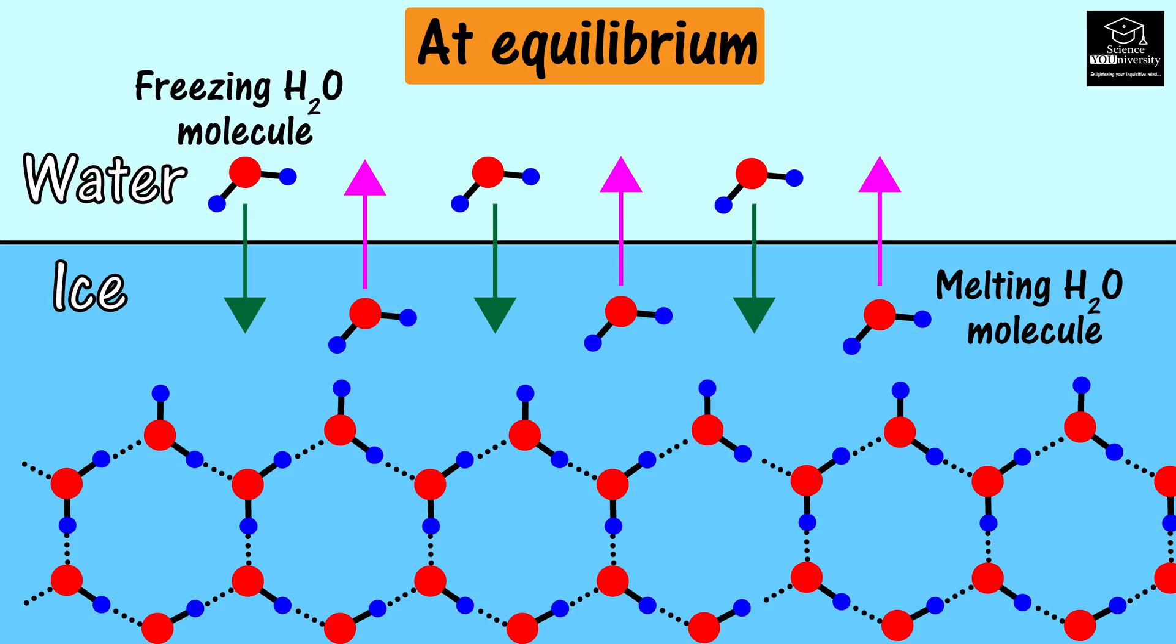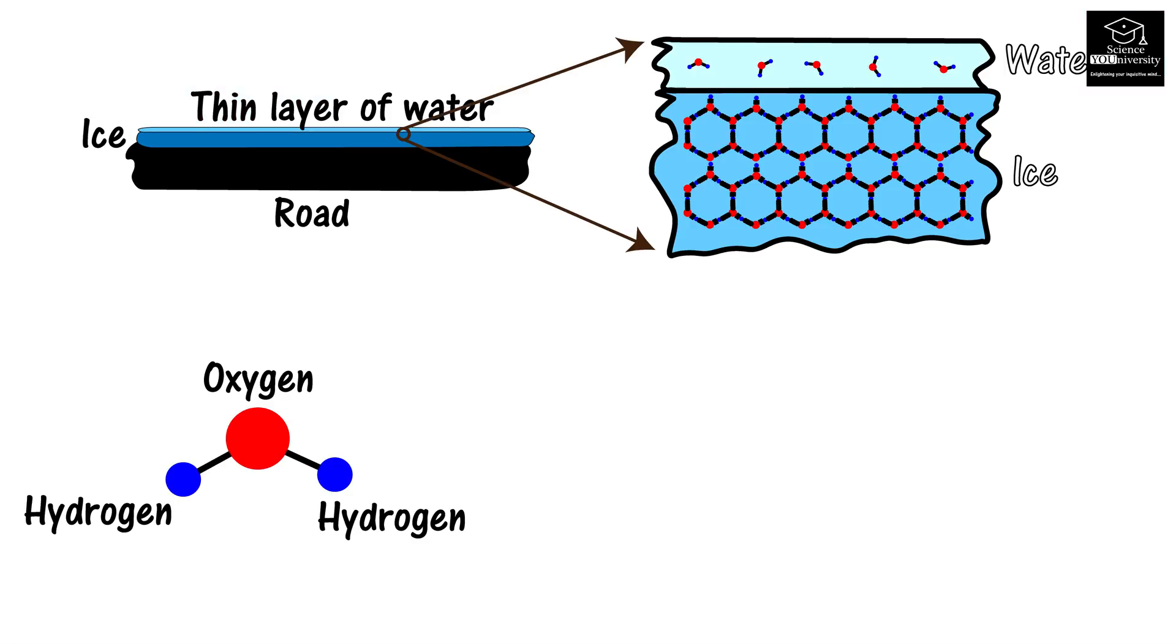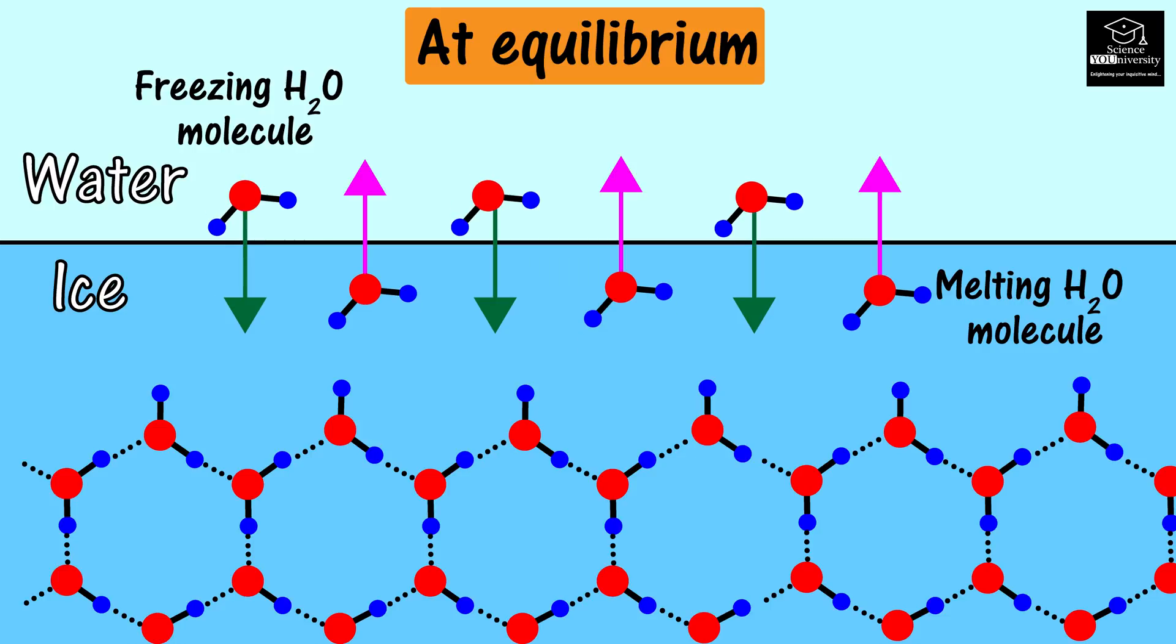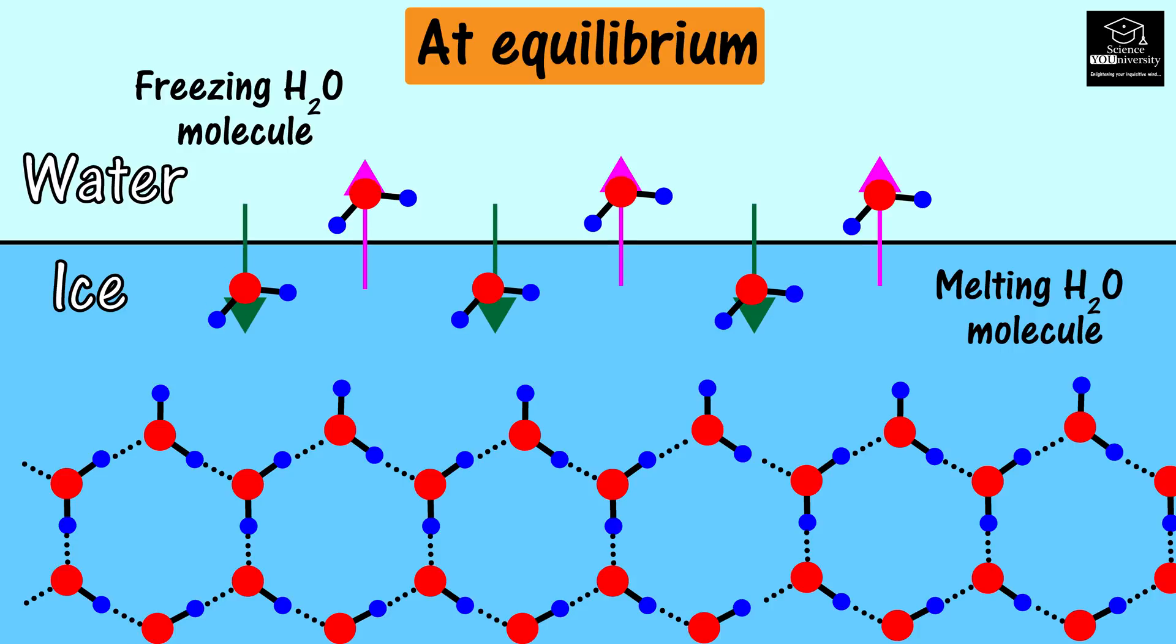At the freezing point, there's an equilibrium between liquid water and ice. Therefore, a thin layer of water can be found on the surface of ice. At equilibrium, some water molecules freeze and the same amount of frozen water molecules melt. Therefore, the amount of ice and water will not change.